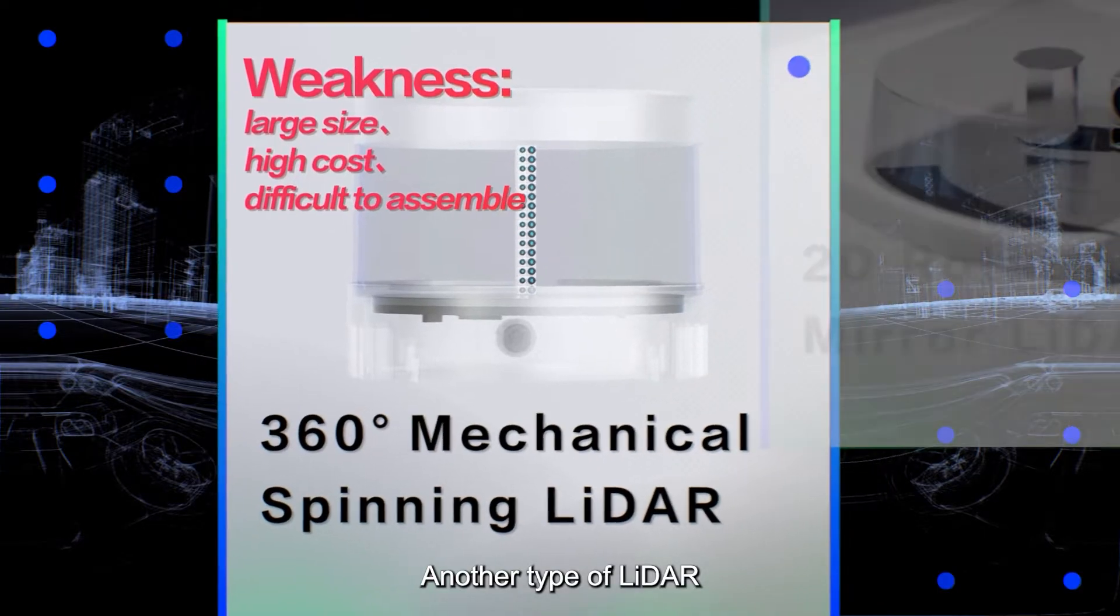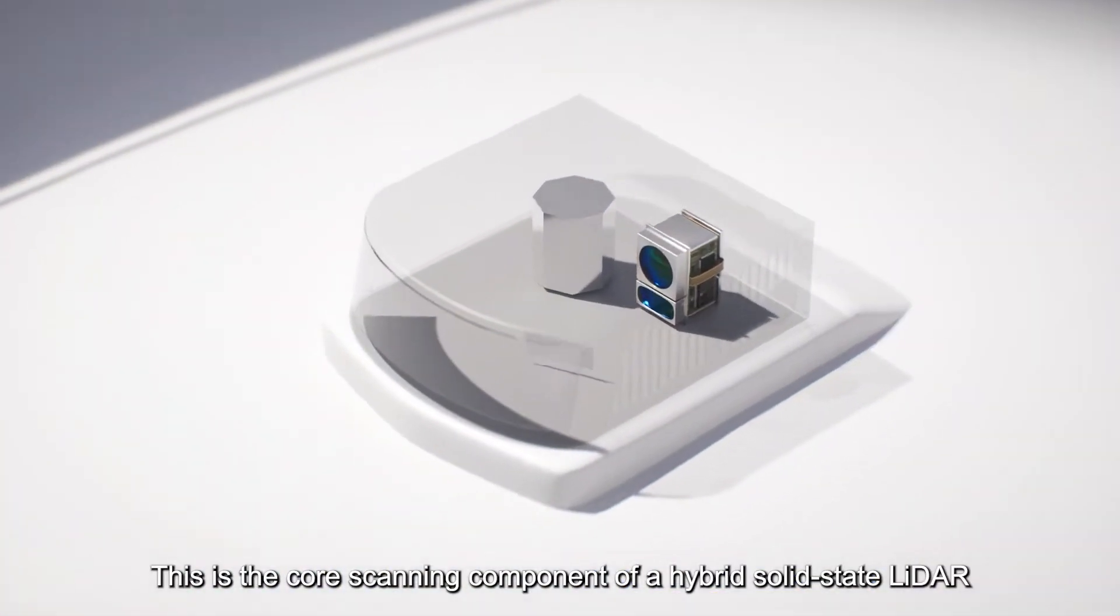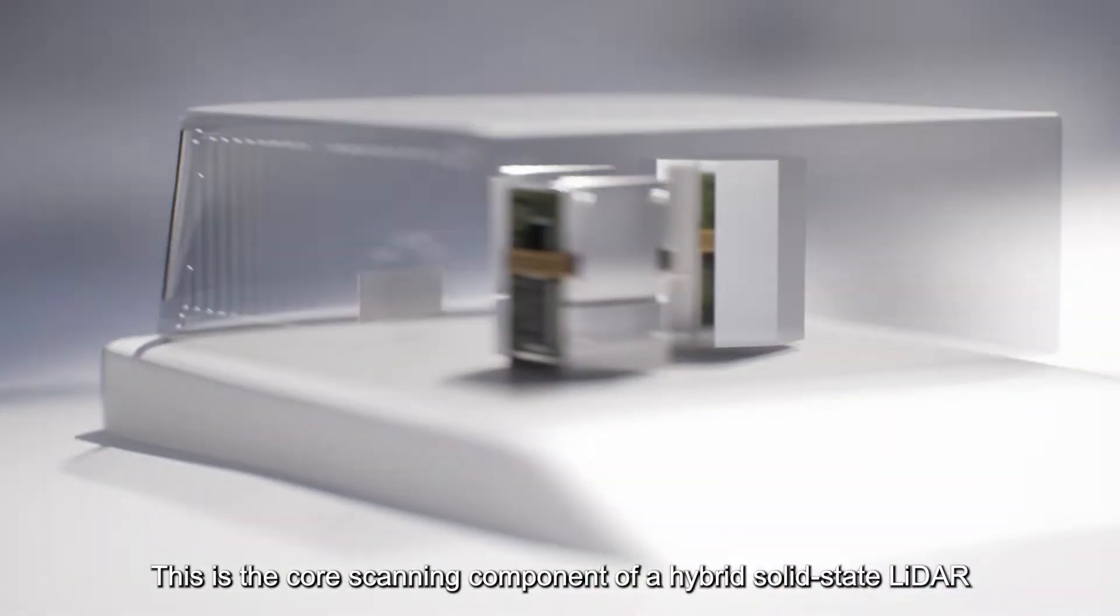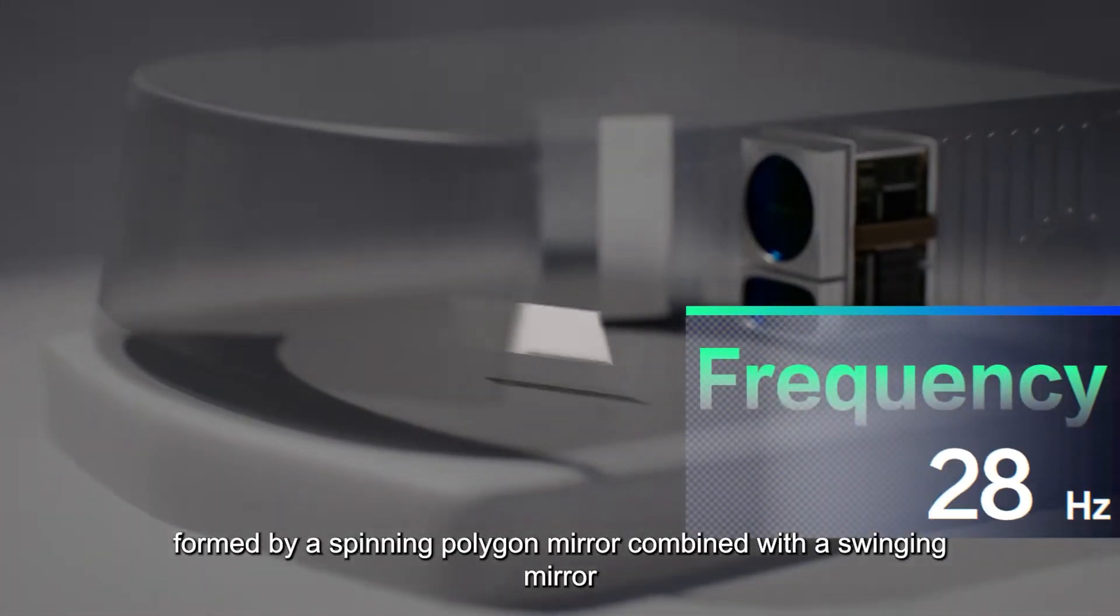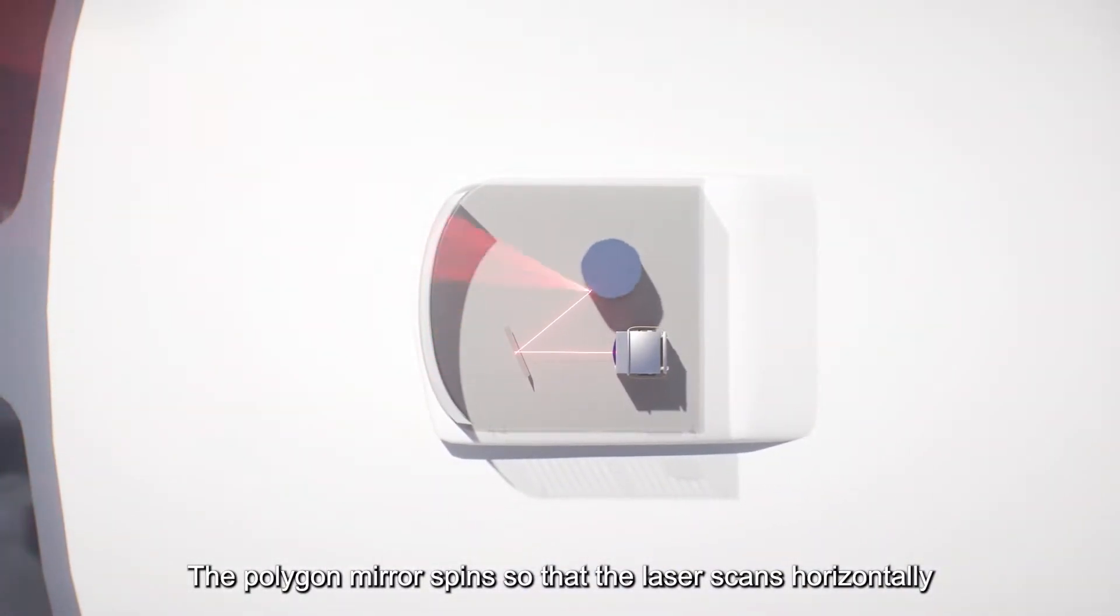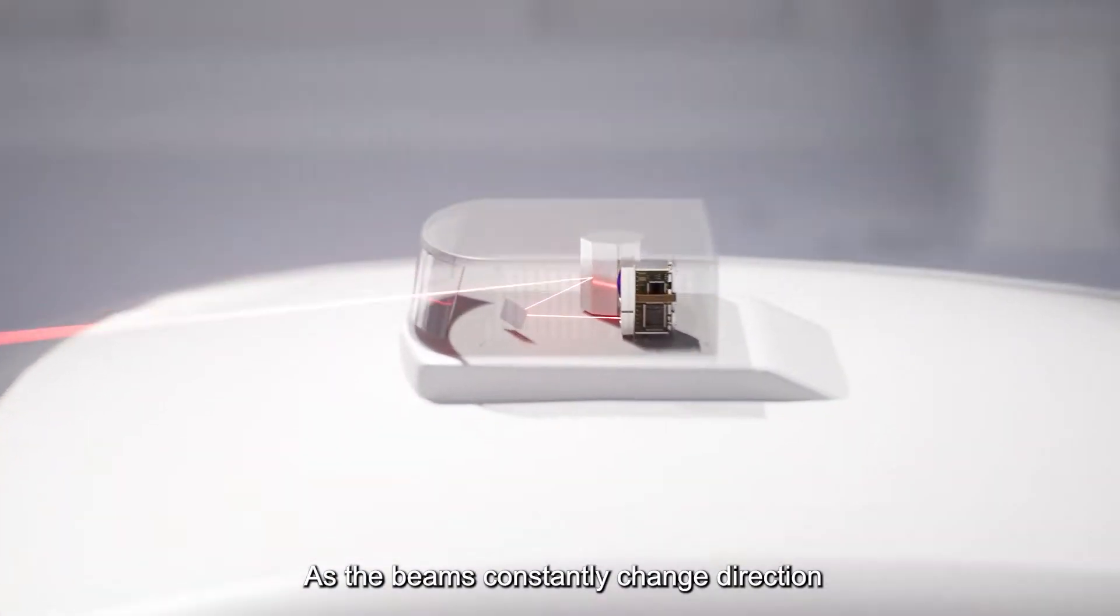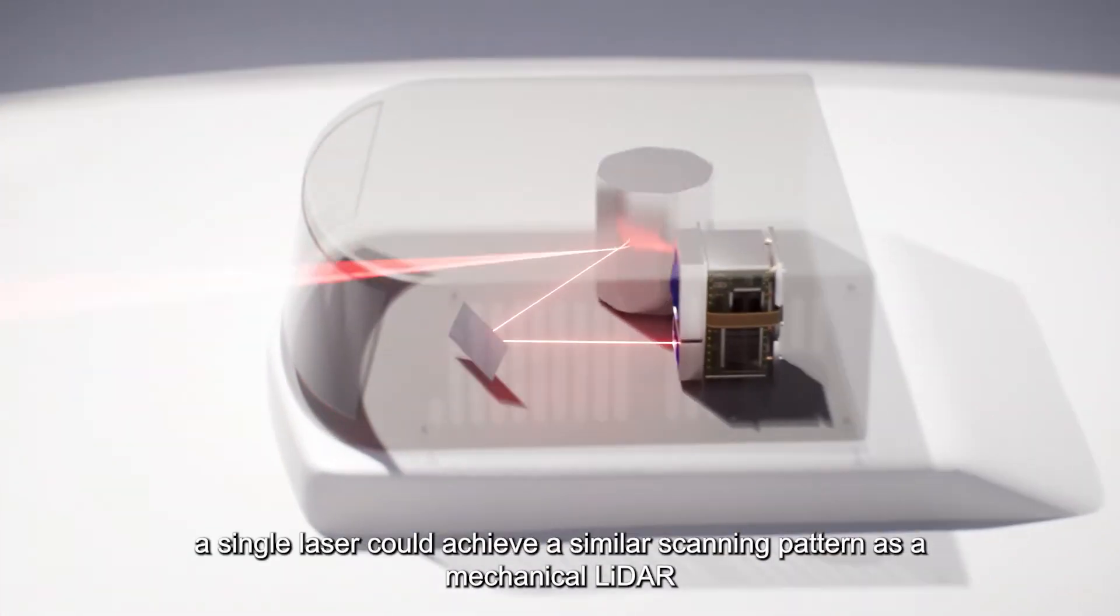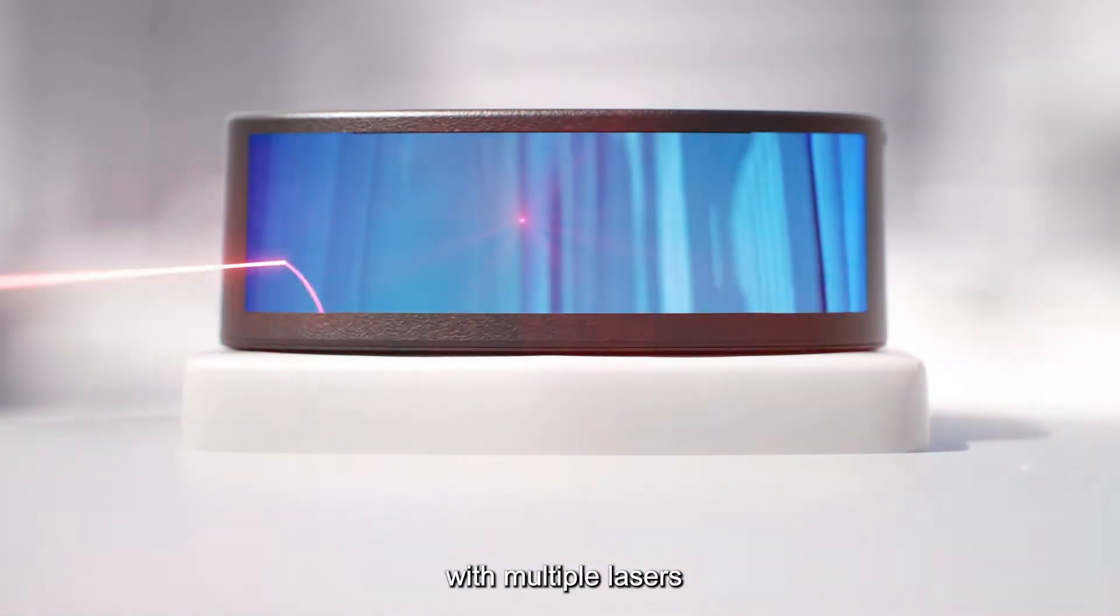Another type of LiDAR, the hybrid solid-state LiDAR, uses two reflecting mirrors that rotate in limited angle ranges. This is the core scanning component of a hybrid solid-state LiDAR, formed by a spinning polygon mirror combined with a swinging mirror. The polygon mirror spins so that the laser scans horizontally, while the swing mirror deflects the laser beams vertically. As the beams constantly change direction, a single laser could achieve a similar scanning pattern as a mechanical LiDAR with multiple lasers.